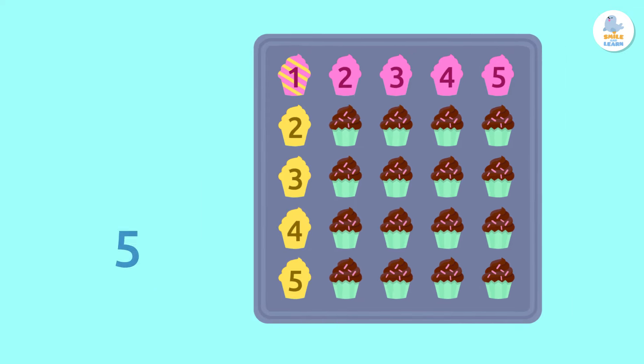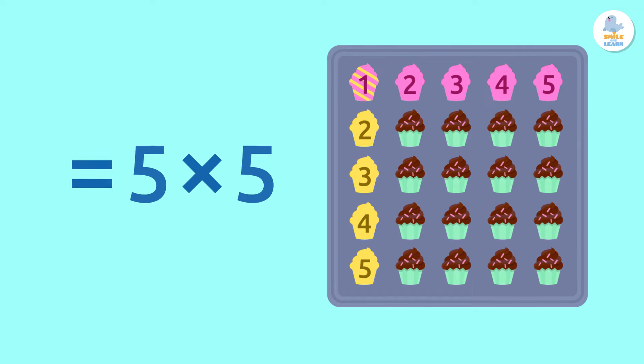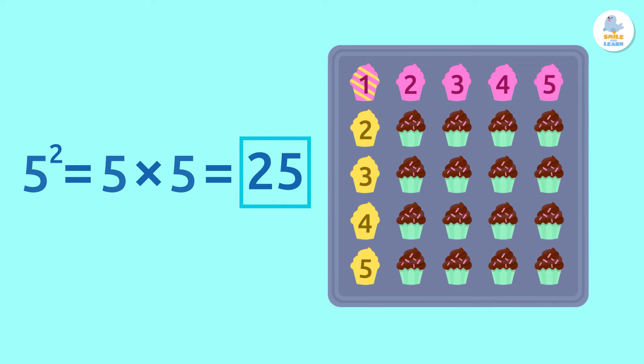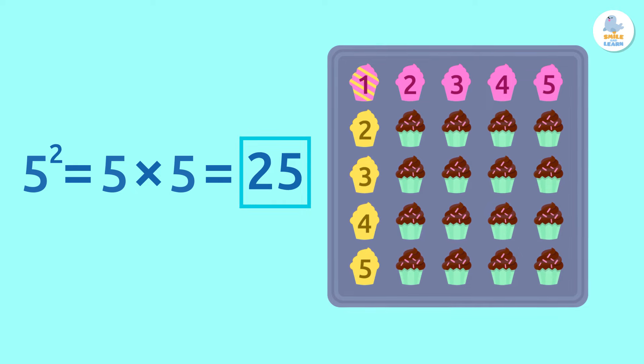As you can see, there are 5 cakes on each side of the tray. If we square that number, we get a total of 25 cakes on the tray. Are you up for finding a square root on your own?